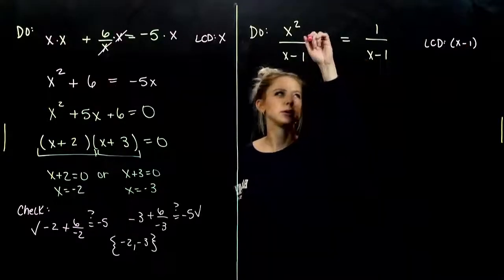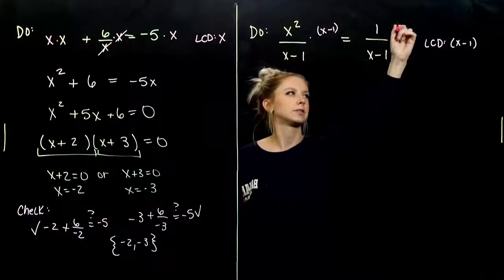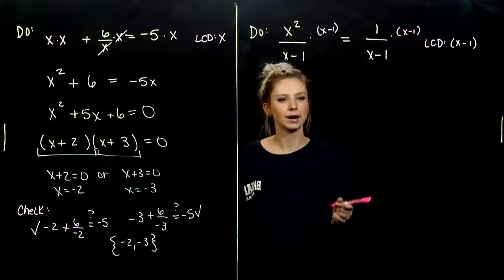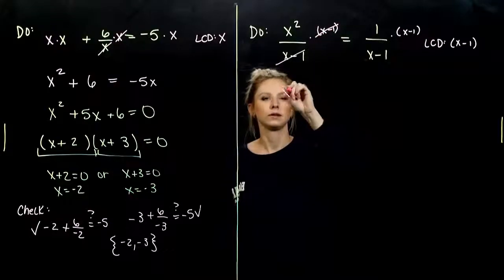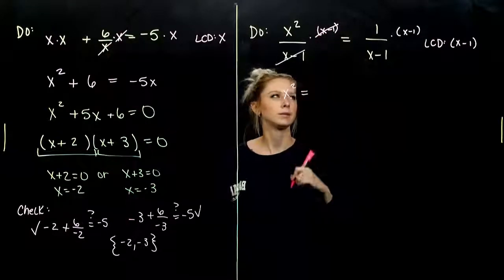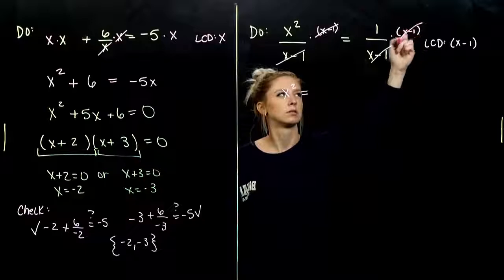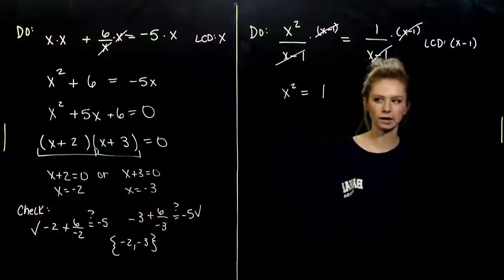So, what happens when I multiply every single term by x minus one? The first one goes away. We've got x squared. And it's equal to what? One. And that one goes away as well.